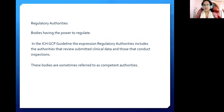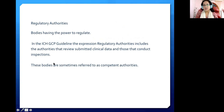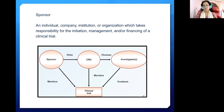Regulatory Authorities are bodies that have the power to regulate. In ICH GCP guidelines, the expression 'regulatory authority' includes the authorities that review submitted clinical data and those that conduct inspections. These bodies are sometimes referred to as competent authorities.